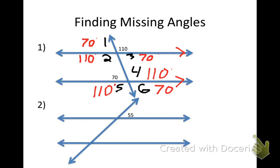Number 2. It only gives me one angle now. I want to find angles 1 through 7. Angle 1 is 55° — because those two angles form a linear pair on that line, which means they are supplementary. So that one has to be 125°.